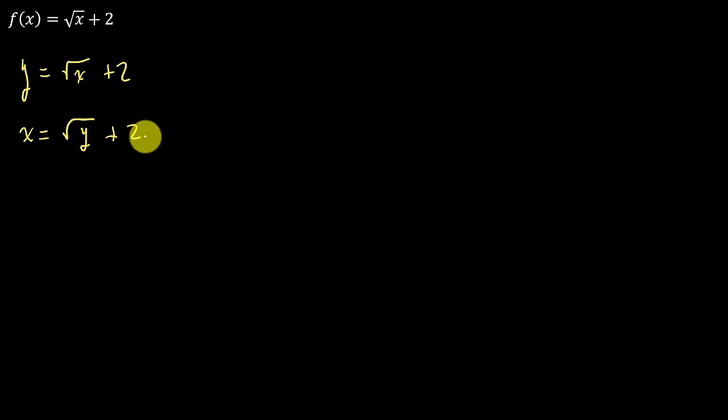And then we solve for y. Alright, so first we do what? Subtract 2 from both sides. So that gives me square root of y is equal to x minus 2.